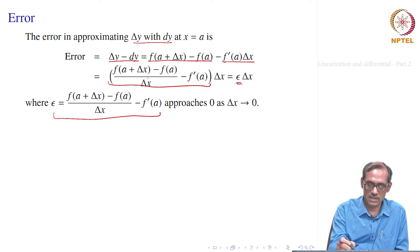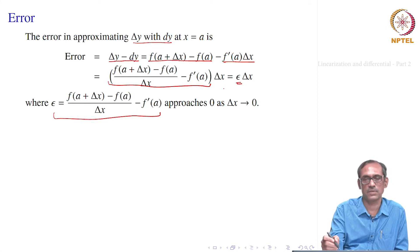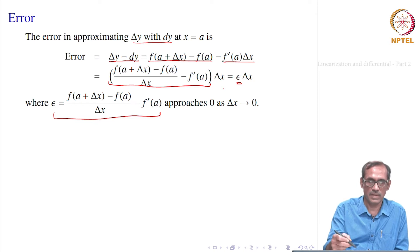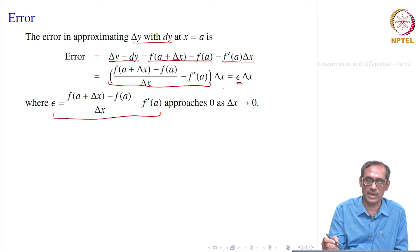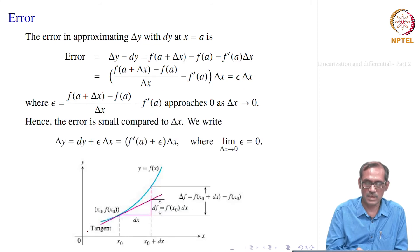The error is of a higher order than delta x. It is equal to something times delta x, where when delta x goes to 0, that something also goes to 0. So the error is of higher order than delta x, not just linear like delta x — it can be delta x squared or something like that. The error is epsilon times delta x, where the limit of epsilon as delta x goes to 0 is 0.